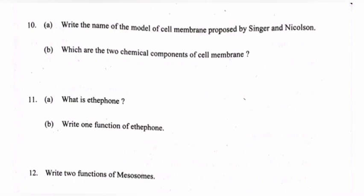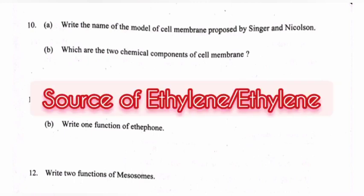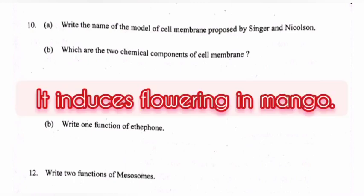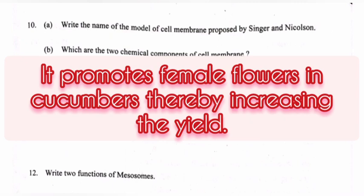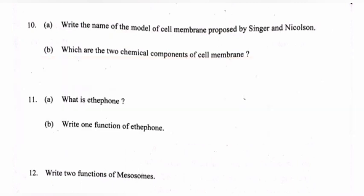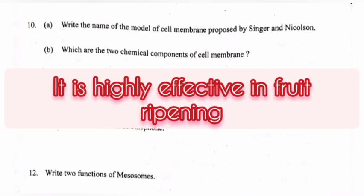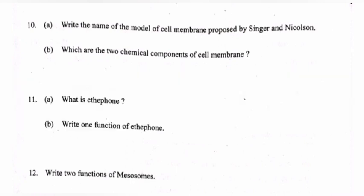A) What is ethephon? Answer: a source of ethylene. B) Write one function of ethephon. Answer: it induces flowering in mango; it promotes female flowers in cucumber thereby increasing the yield; it breaks seed and bud dormancy; it is highly effective in fruit ripening. Write any one.